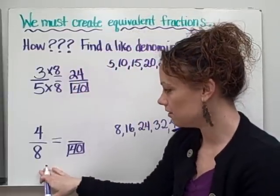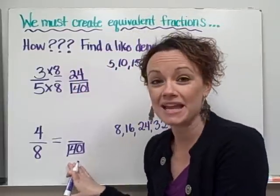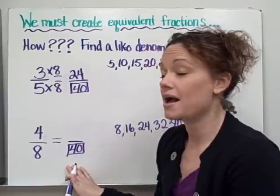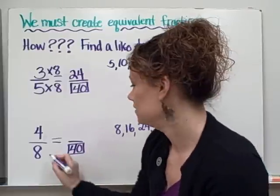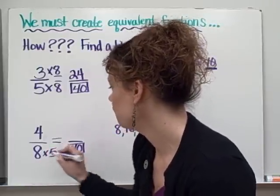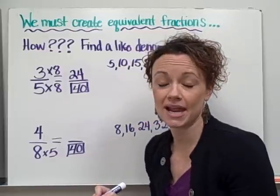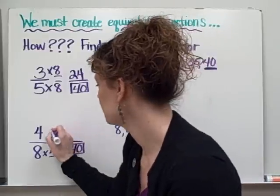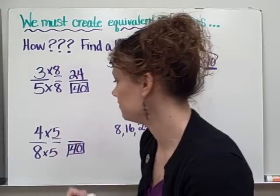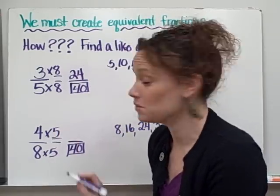Same thing down here. We ask ourselves, how do we get from eight to forty? We're going up, so we're using multiplication. Eight times five equals forty. Whatever we do to the denominator, we must do to the numerator. So four times five, and four times five equals twenty.